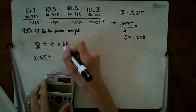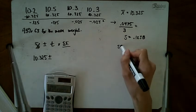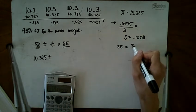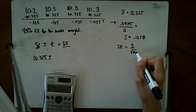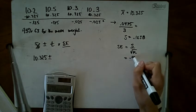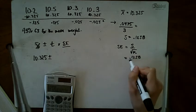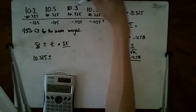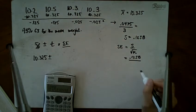The standard error is s over the square root of n. So I have 0.125 divided by the square root of n. I took four measurements, so it's 0.125 divided by the square root of 4, or divided by 2.